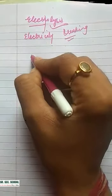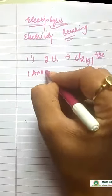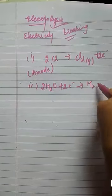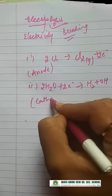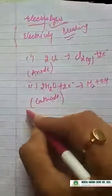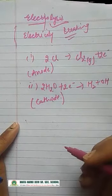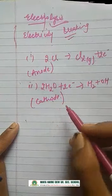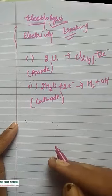In electrolysis, two electrodes are used — anode and cathode. At the anode, two chloride ions convert to Cl2 and two electrons are released. At the cathode, 2H2O plus two electrons gives H2 plus OH⁻. At the anode, oxidation occurs, and at the cathode, reduction occurs. This concept will come again in higher classes and in the next lesson on metals and non-metals, so a detailed treatment is not needed here.